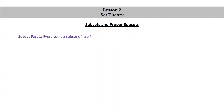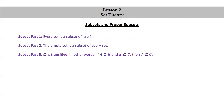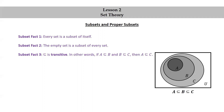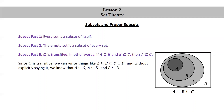Subset fact one: every set is a subset of itself. Subset fact two: the empty set is a subset of every set. And subset fact three: the subset relation is transitive — in other words, if A is a subset of B and B is a subset of C, then A is a subset of C. Here's a nice Venn diagram showing what transitivity looks like. We have A a subset of B a subset of C. Notice that if we ignore B in the middle, we see that A is a subset of C as well — the darker circle representing A is fully contained in the lighter circle representing C. Since subset is transitive, we can write things like A is a subset of B, a subset of C, a subset of D, and without explicitly saying it, we know that A is a subset of C, A is a subset of D, and B is a subset of D as well.